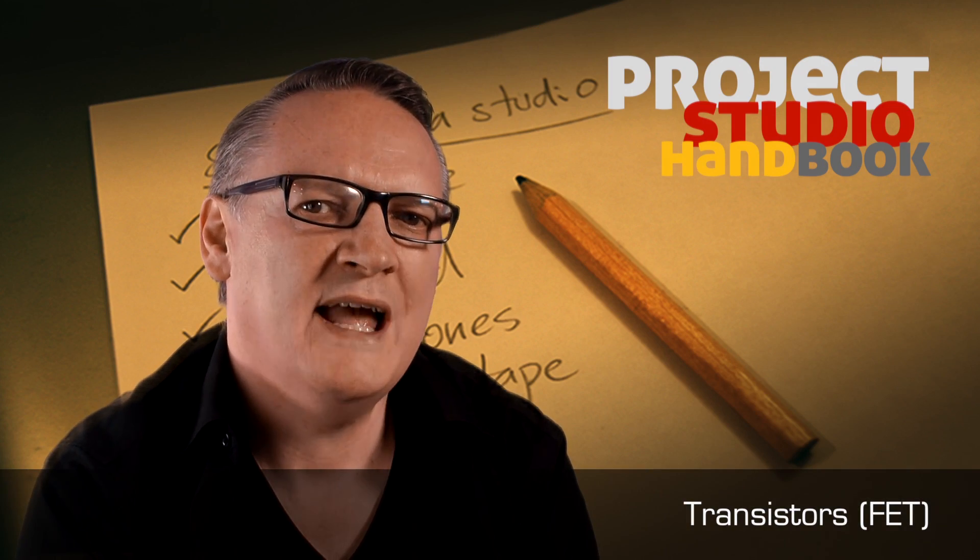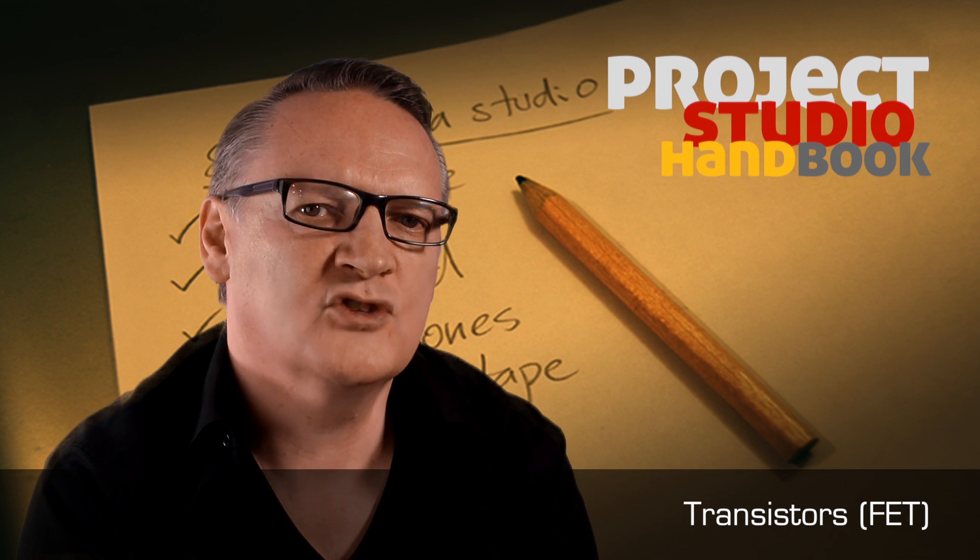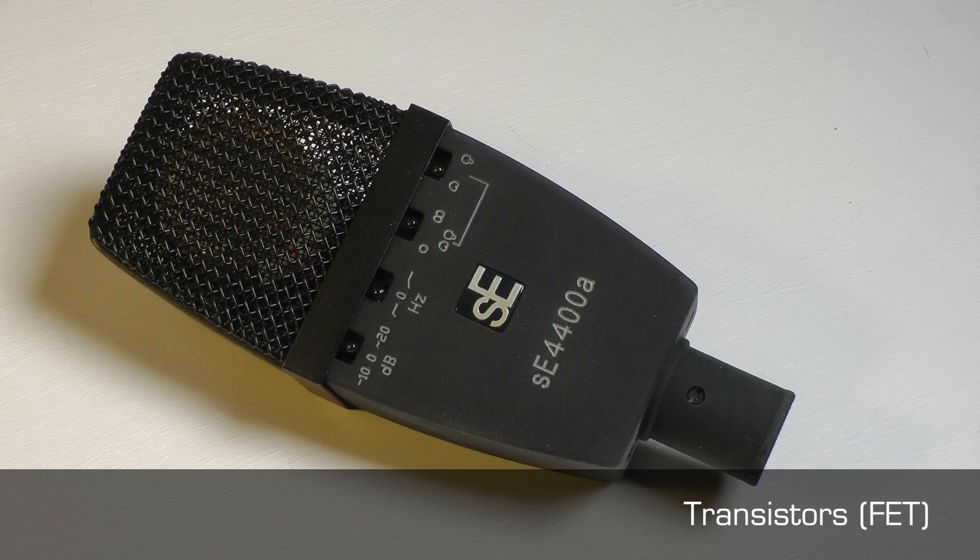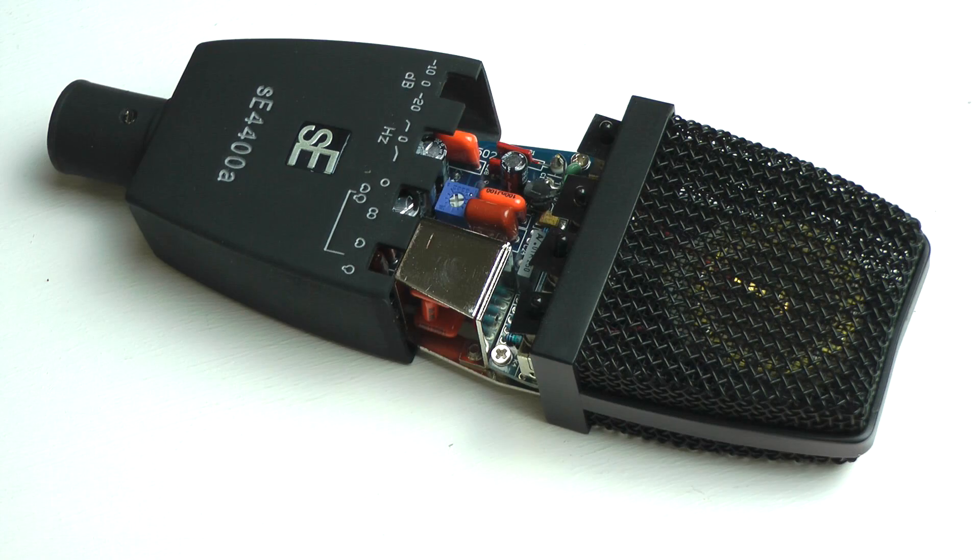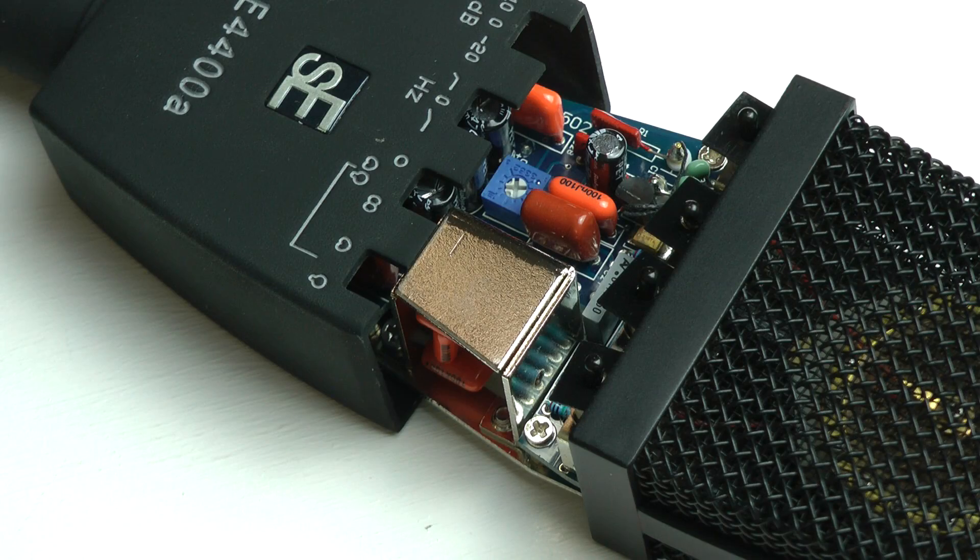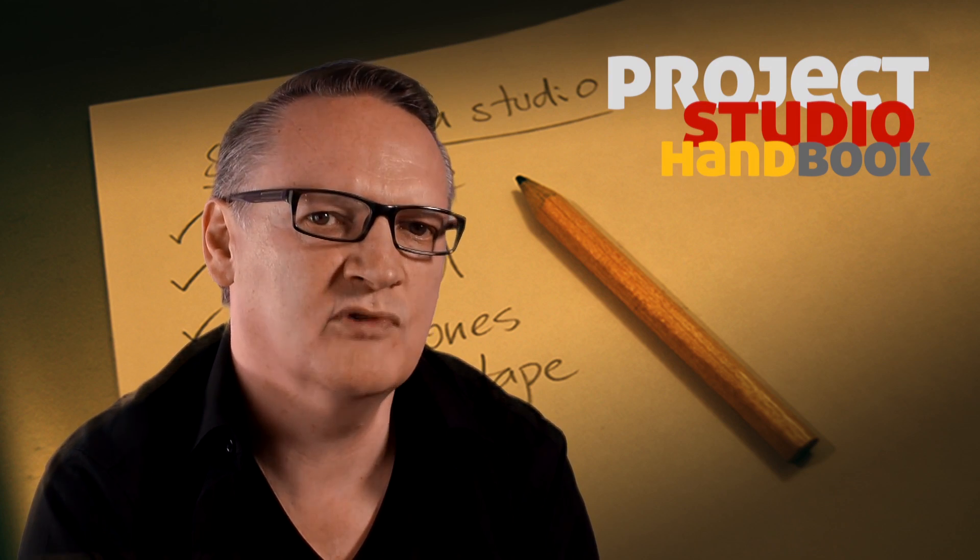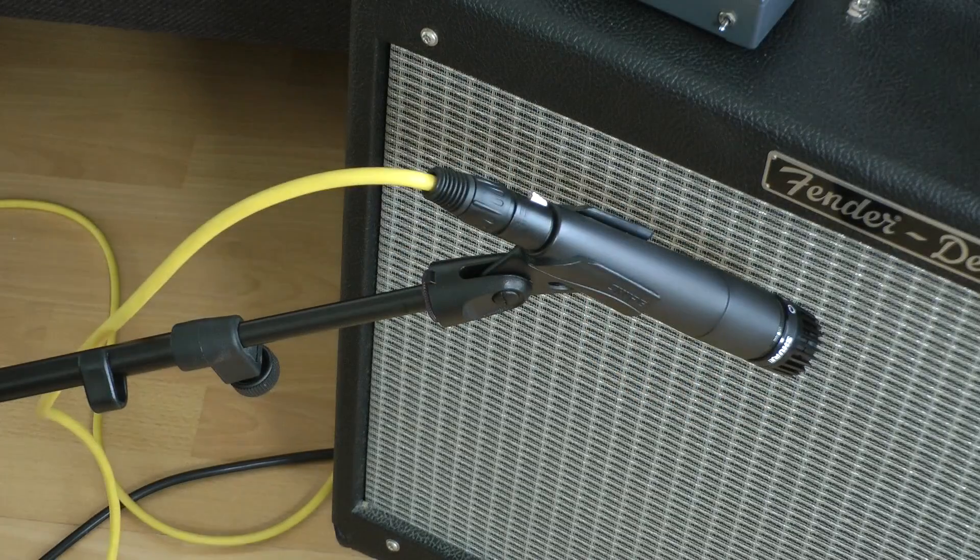Microphones that employ FET or field effect transistors in their circuitry are capable of greater transparency and accuracy and are used for capturing the true character of a sound. Both dynamic and many capacitor microphones have these types of circuits.